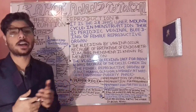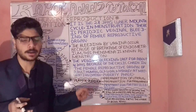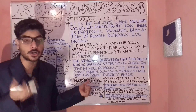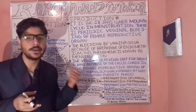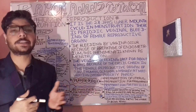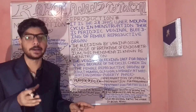The menstruation phase starts from day one and continues towards day five. The second phase is the estrogen phase, which initiates from day five and goes towards day 14. The duration of the estrogen phase is approximately 10 to 12 days — counting from day five to day 14.